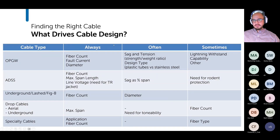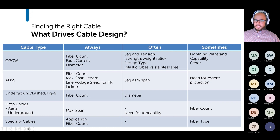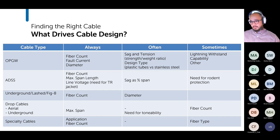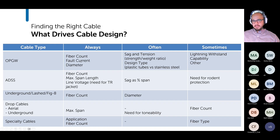What are the main factors driving cable design? For OPGW: fiber count, fault current, and diameter are the biggest factors. You'll also often see sag and tension requirements, strength-to-weight ratio, design type — such as plastic tubes versus stainless steel tubes — lightning withstand capability, and sometimes a need for non-specular cable depending on your project.